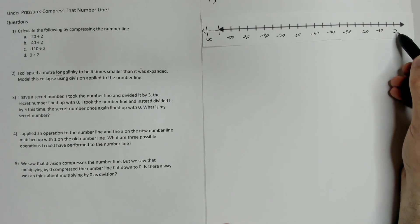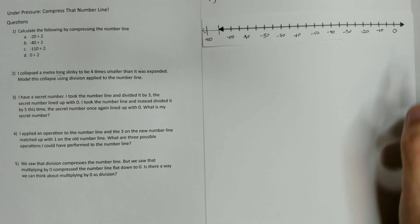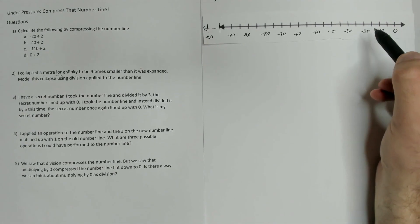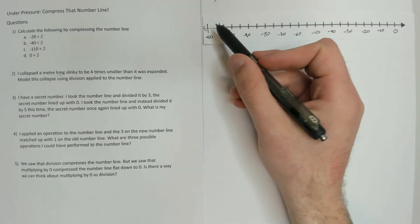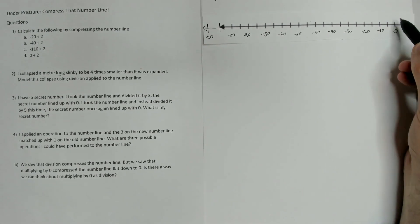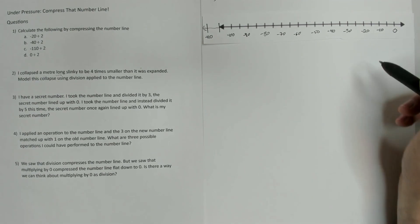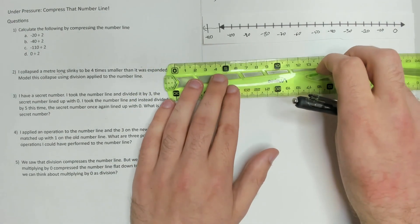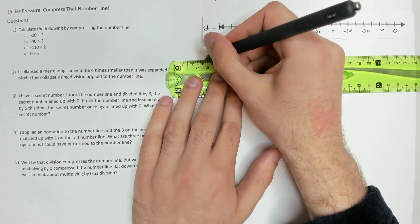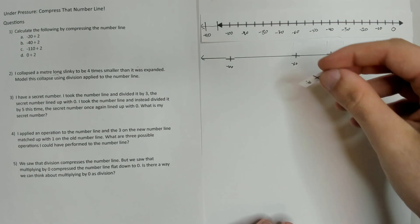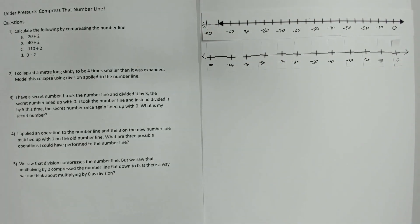The number line starts at 0 and goes only to the left of 0, because we don't need any positives. Every label is a multiple of 10 — negative 10, negative 20, negative 30, and so on, all the way up to negative 110. I didn't have quite enough room, so I had to draw negative 110 over here, but that's alright. To go from one labeled tick to the next, I have two units of distance in between, which will make it easier when we want to divide this number line by 2.